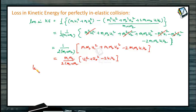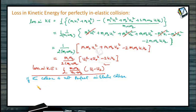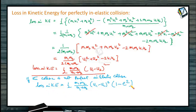So loss in kinetic energy is equal to half of m1 m2 divided by m1 plus m2 into u1 minus u2 whole squared. The positive value indicates that there is always a loss in kinetic energy in a perfectly inelastic collision. For a collision that is not perfectly inelastic, if a coefficient of restitution e is given, the loss in kinetic energy can be written as half of m1 m2 divided by m1 plus m2 into u1 minus u2 whole squared into 1 minus e squared. In the case of a perfect elastic collision, e equals 1 and loss is zero; for perfectly inelastic collision, e equals 0 and we get back the original formula.